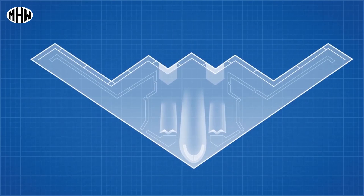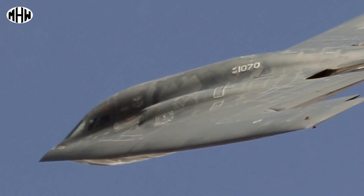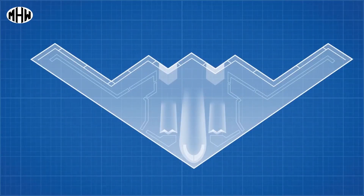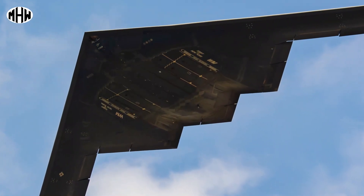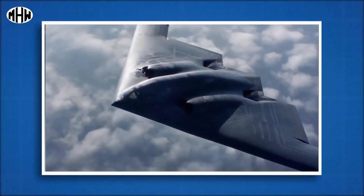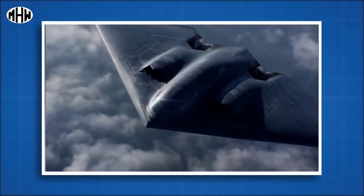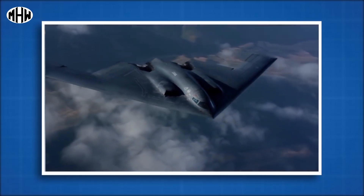Beyond its shape, the B-2 is also made with advanced composite materials capable of absorbing and dissipating incoming radio energy. The exact composition is classified, but we know the skin is made from carbon fiber reinforced plastic, while the leading edge is likely painted with a material containing small iron particles which absorb electromagnetic energy and convert it to heat. With these technologies combined, the B-2 barely even registers on radar screens.